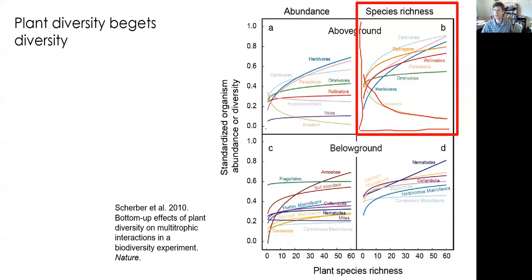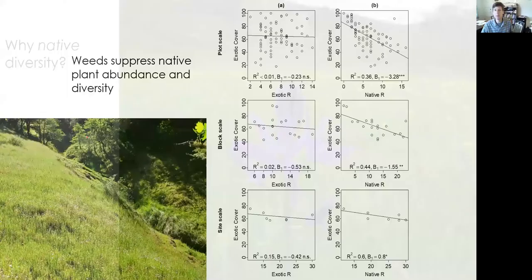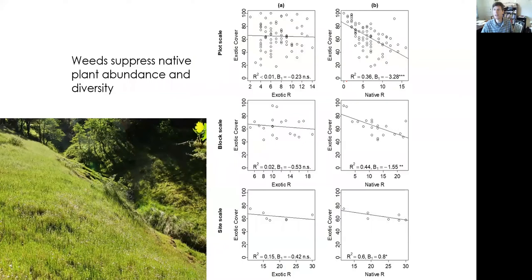Restoring diversity is one way to restore ecosystem functions — but why plant native diversity? Why are weeds or invasives not the way to go? These data show the association between native richness and exotic plant cover is negative: the more exotics you have in terms of biomass, the lower the diversity of natives. This holds true at both the plot scale and the site scale.